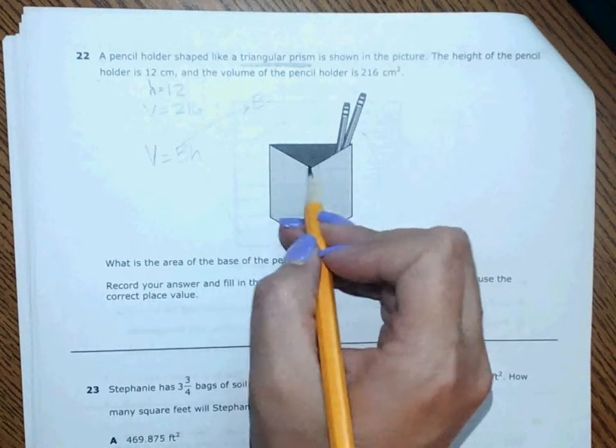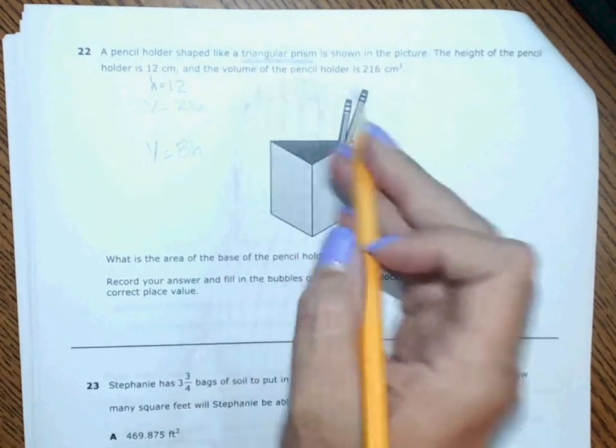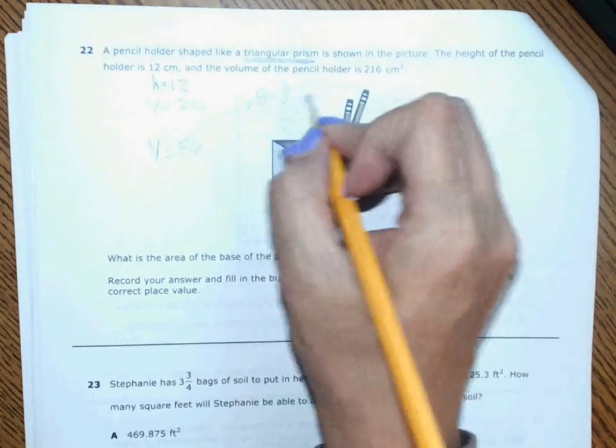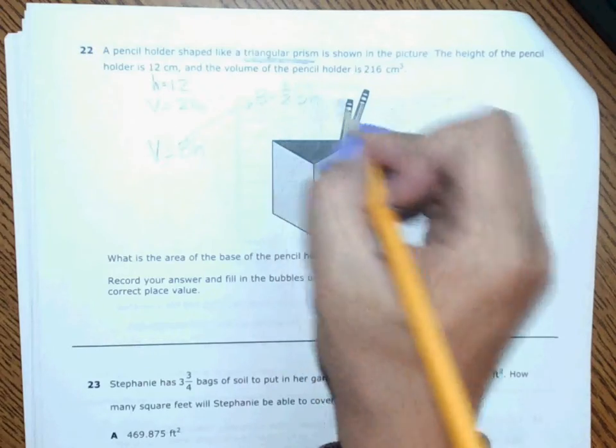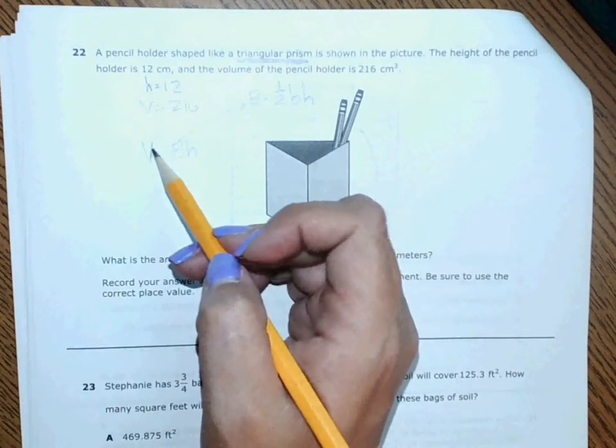In this case, B is this shaded base and it has to be the shape of a triangle because that's the name of it, which means to find the area of that is one-half b times h, because it's a triangle.